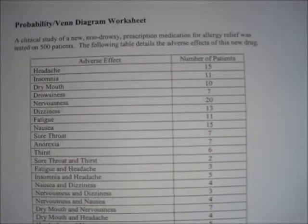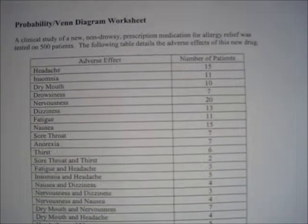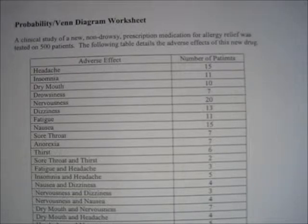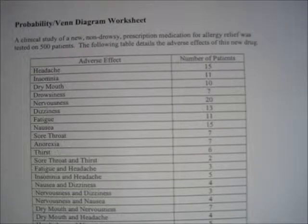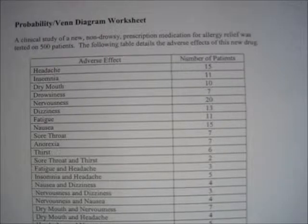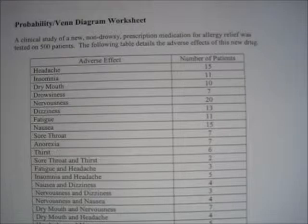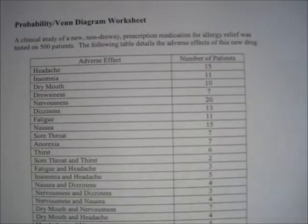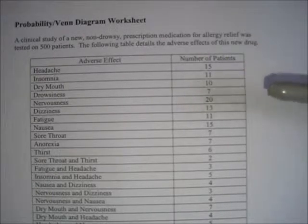Here is our probability and Venn diagram worksheet. We're only going to deal with the Venn diagram portion of it at this time. We'll revisit the probability portion in module six. It says a clinical study of a new non-drowsy prescription medication for allergy relief was tested on 500 patients. The following table details the adverse effects of this new drug and all the different adverse effects that different patients experienced.